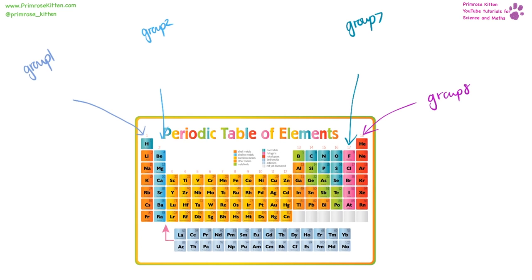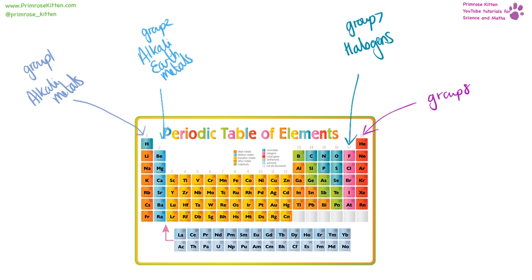The beautifully coloured periodic table shows there are lots of different groups and categories. Group one is also known as the alkali metals. Group two are the alkaline earth metals. Group seven are the halogens. Group eight are the noble gases. The big chunk in the middle are the transition metals.